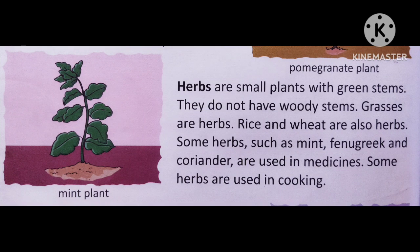Now let's move to herbs. Herbs are small plants with green stems. They do not have woody stems. Grasses are herbs. Rice and wheat are also herbs. Some herbs such as mint, fenugreek, and coriander are used in medicines. Some herbs are used in cooking. Grasses, rice, and wheat are all examples of herbs.